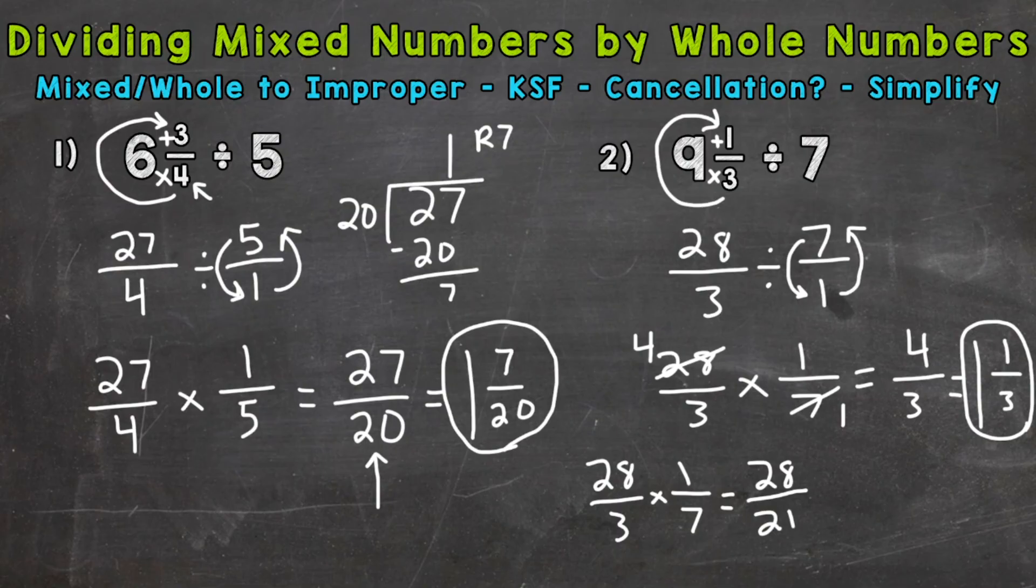We have an improper fraction. Let's convert it to a mixed number. So 28 divided by 21. How many whole groups of 21 out of 28? Well, 1. And we have a remainder of 7. Keep our denominator of 21 the same. So we get 1 and then 7 over 21. But we can simplify 7 over 21 because we have a greatest common factor of 7. Let's divide each of these by 7 in order to simplify.